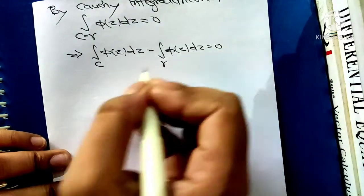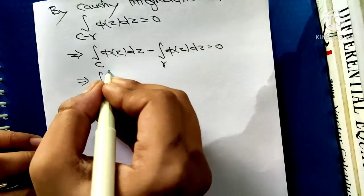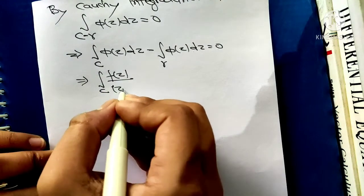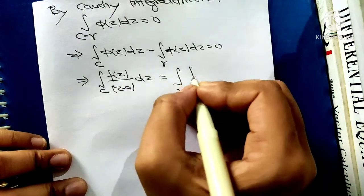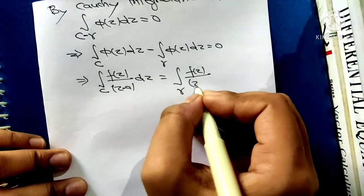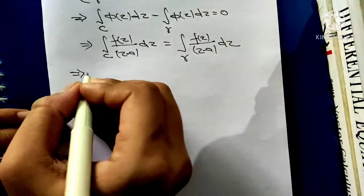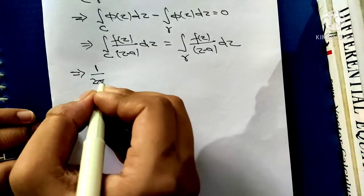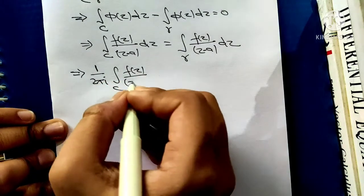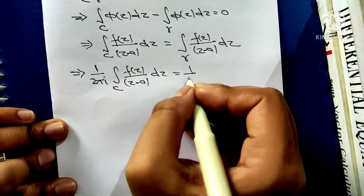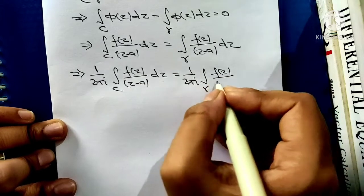So we can write: the integral over C of f(z) upon z minus a dz minus the integral over gamma of f(z) upon z minus a dz equals 0. Multiplying both sides by 1 upon 2πi, we get equation 2.